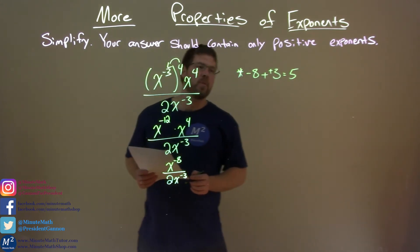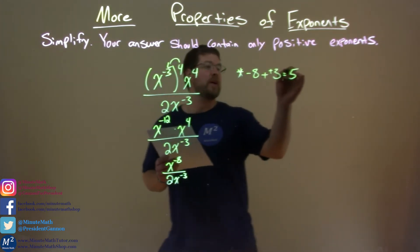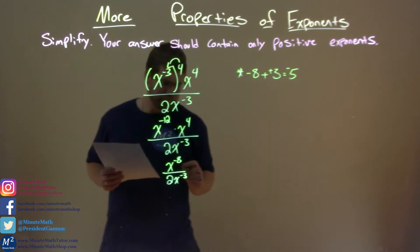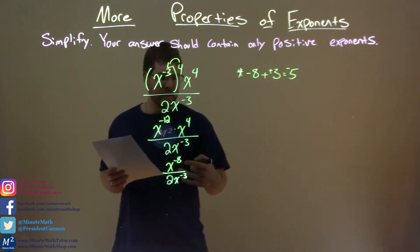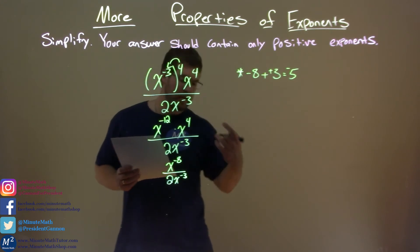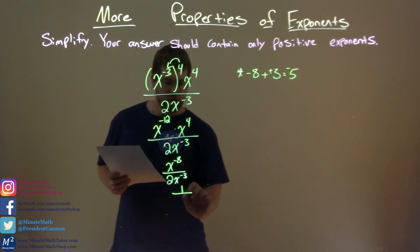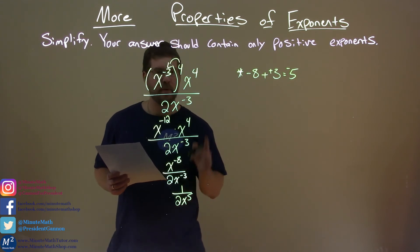So with the negative 5 there, what that does is bring that—it's negative in the numerator, so positive in the denominator. We have 1 in the numerator, and we have 2x to the positive fifth power in the denominator.